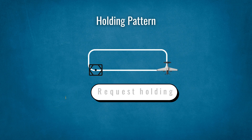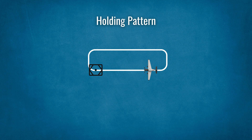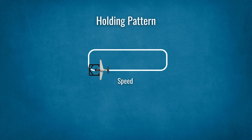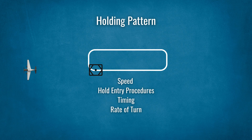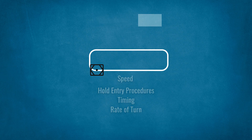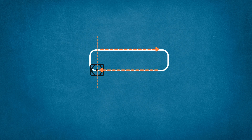Under Instrument Flight Rules (IFR), pilots are expected to adhere to prescribed holding procedures, inclusive of speed, hold entry procedures, timing, and rate of turn, as the protected airspace for the holding pattern, and thus separation from other traffic, is predicated on those procedures. A standard holding pattern is depicted in the following diagram, which shows the ground track as it would appear in still air conditions.